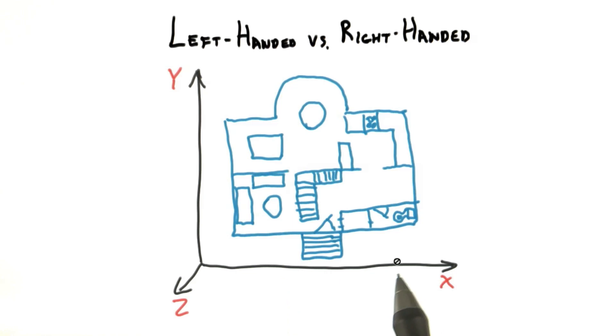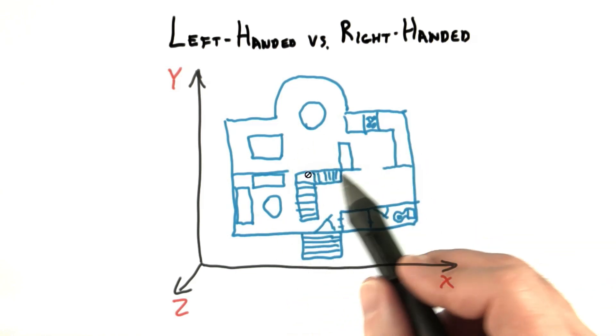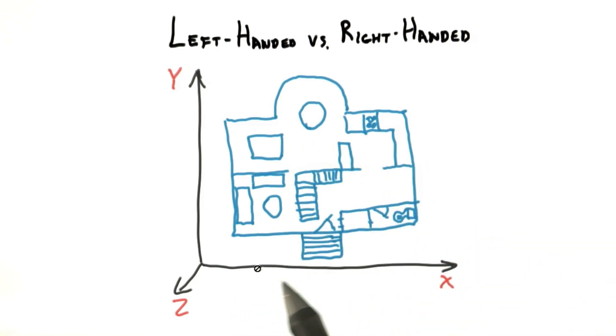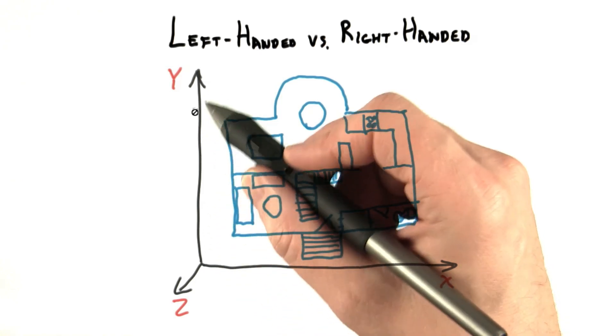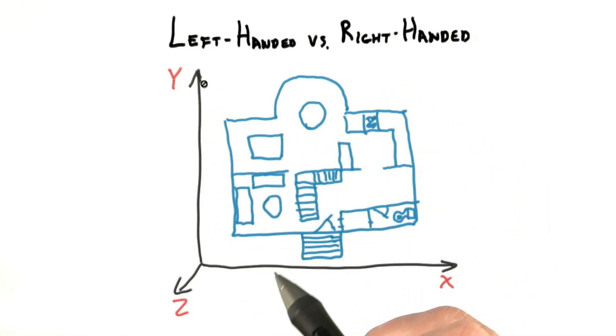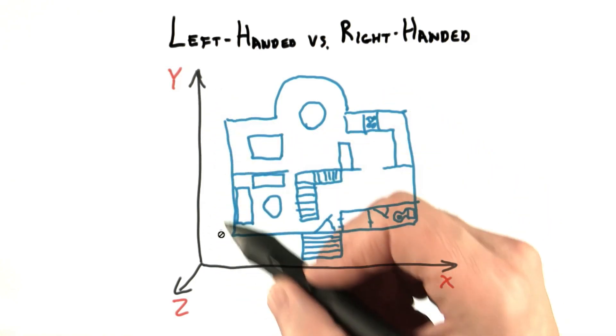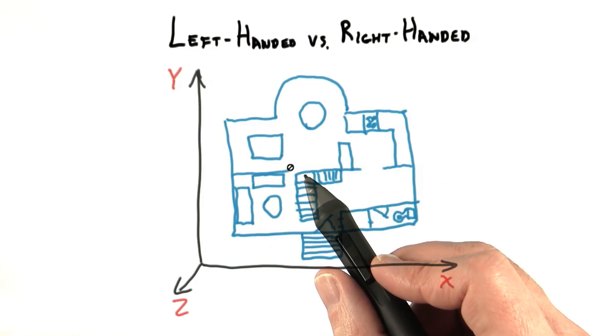Here's an example of a right-handed coordinate system. Say I want to build a building. I define the x-axis as going east and the y-axis as going north. Now my floor plan shows x pointing right, y pointing up. This is the standard 2D Cartesian coordinate system.